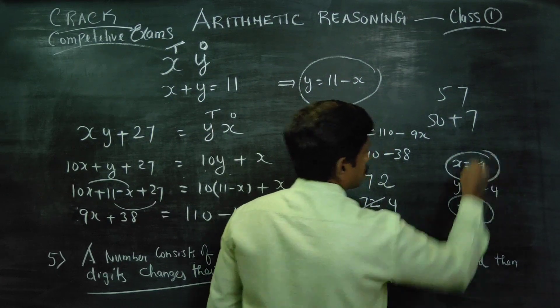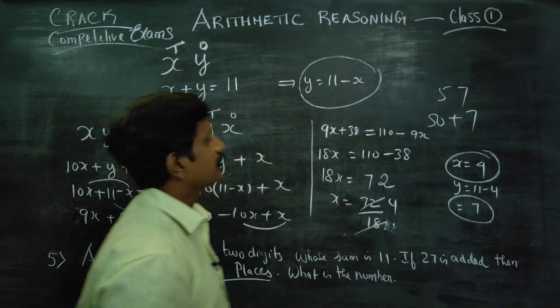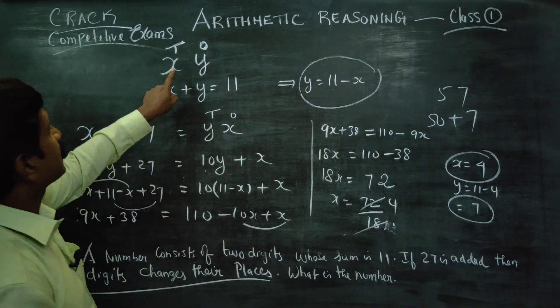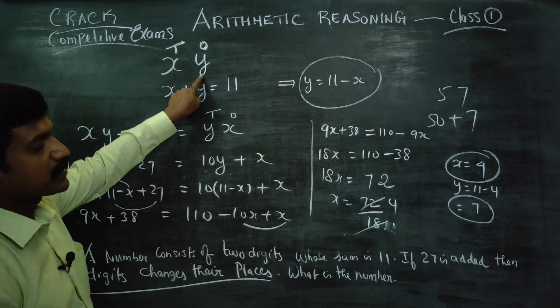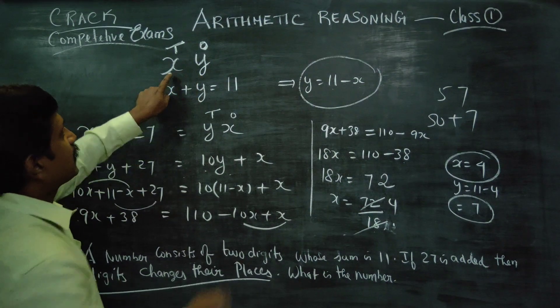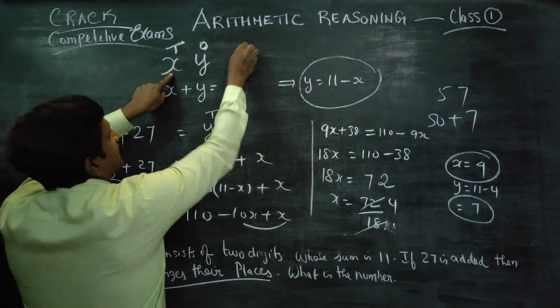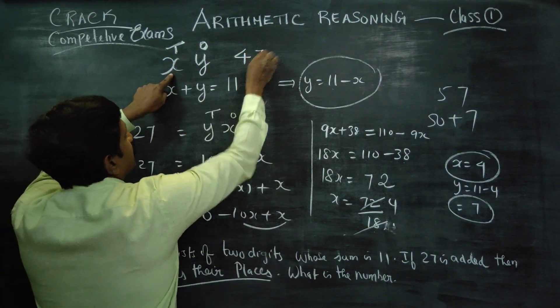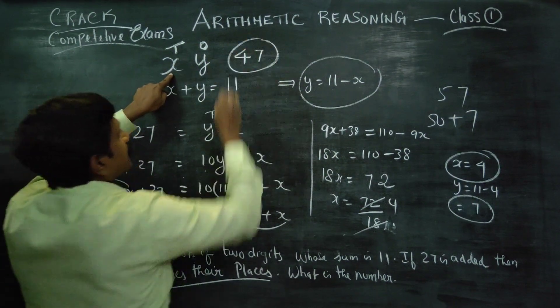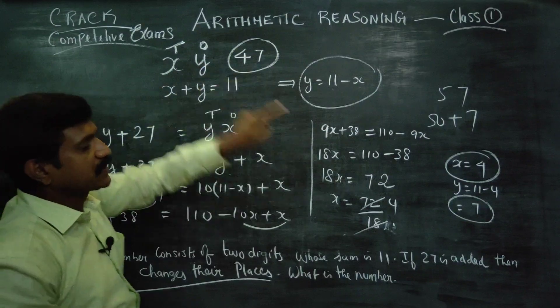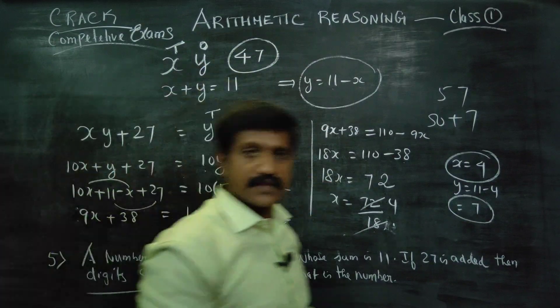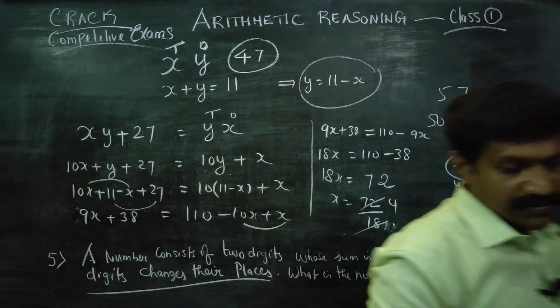If x is ready, y is ready. If you get the 2-digit number, if you get 4, y is ready. If you get 4, y is ready. This is a good answer.